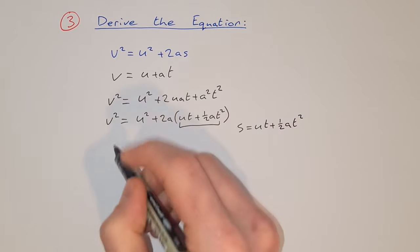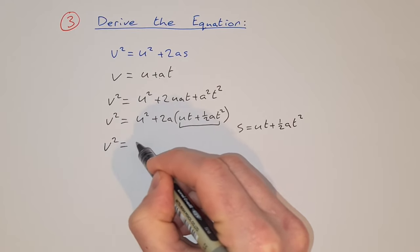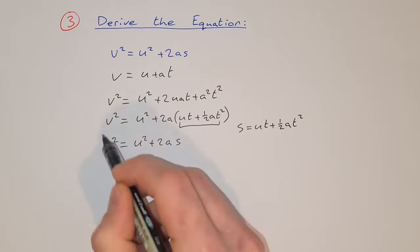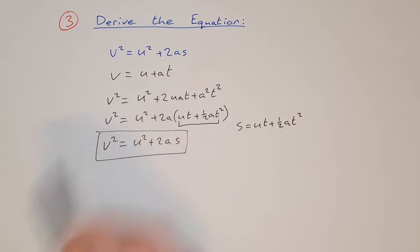So we can substitute that in. So now we have v squared is equal to u squared plus 2as, which is what we were asked to derive in the first place.